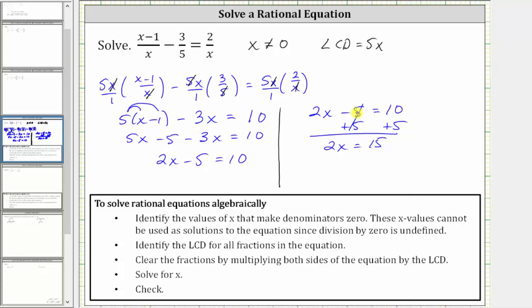The last step is to solve for x by dividing both sides by two. Simplifying, we have x equals 15 halves. X equals 15 halves is the solution to the given rational equation.